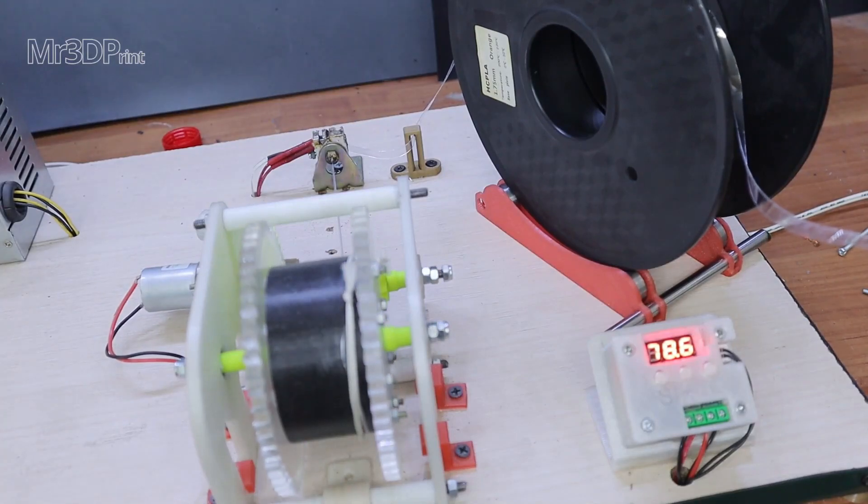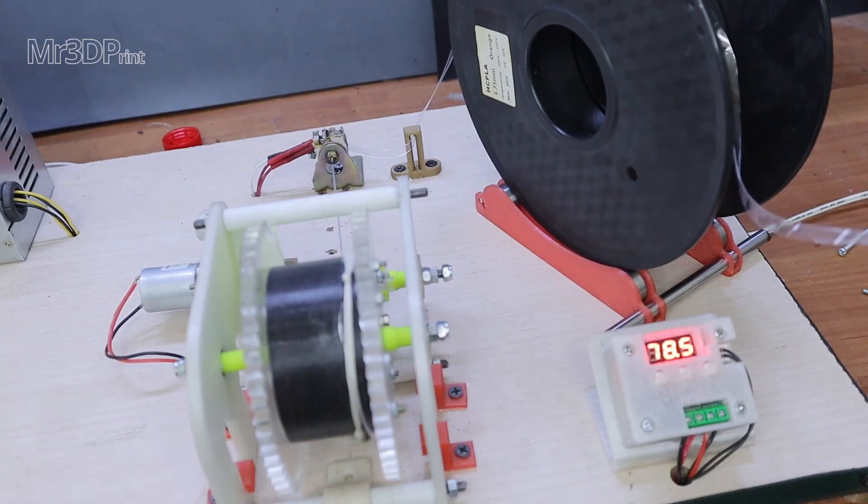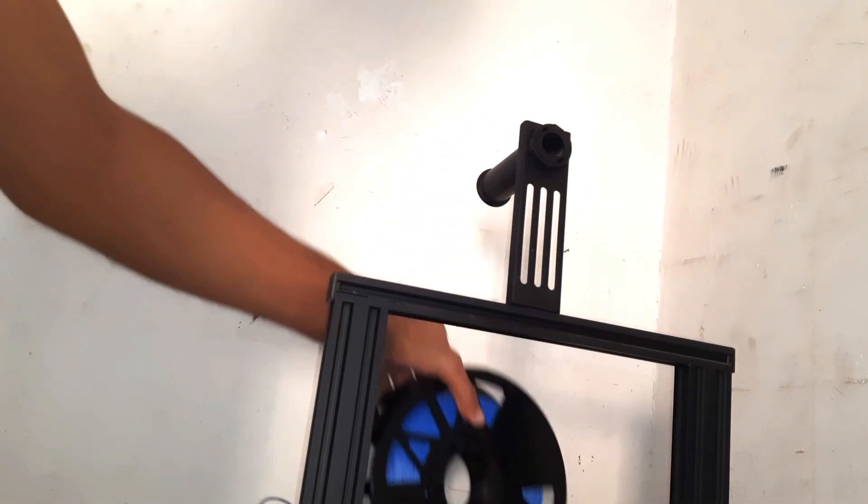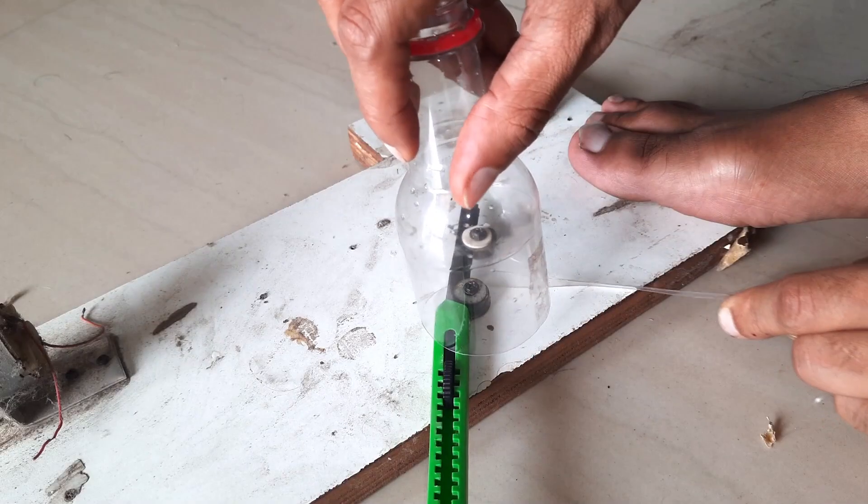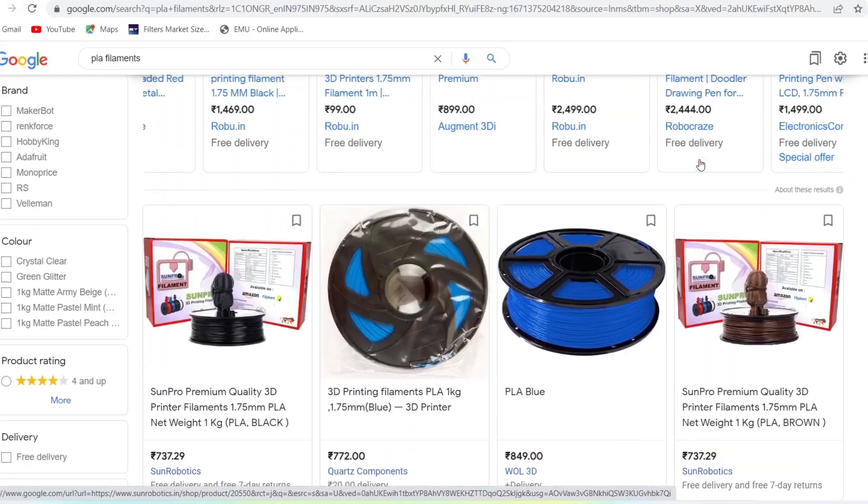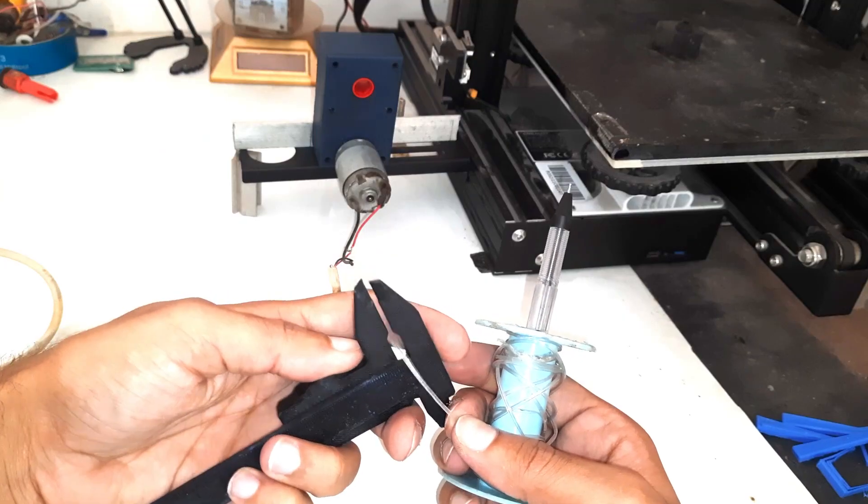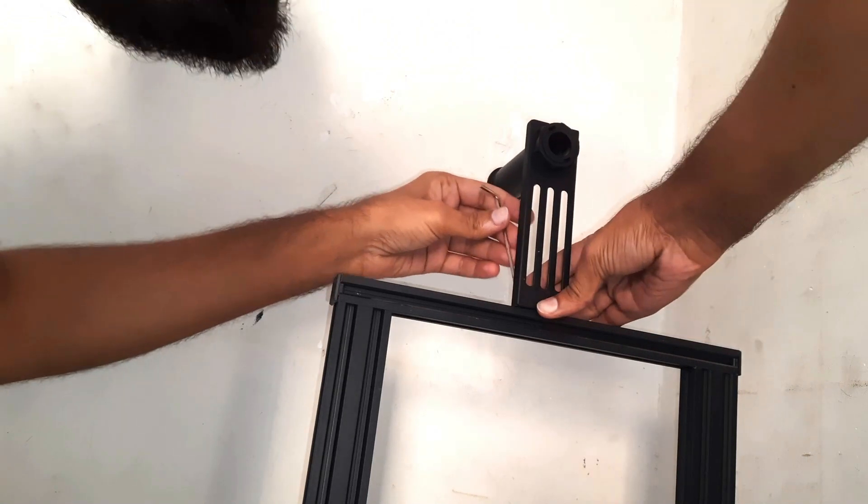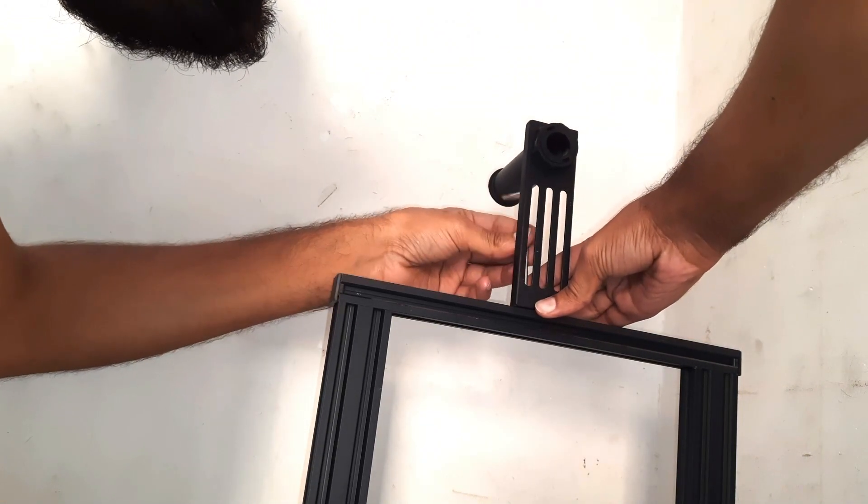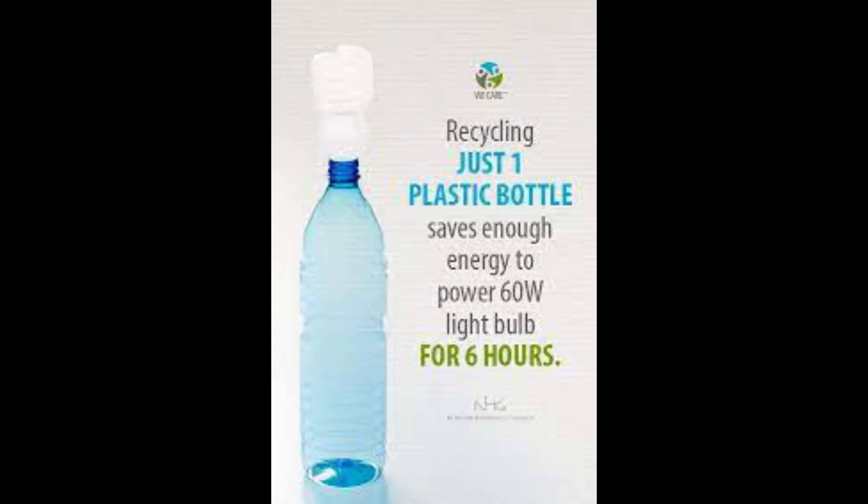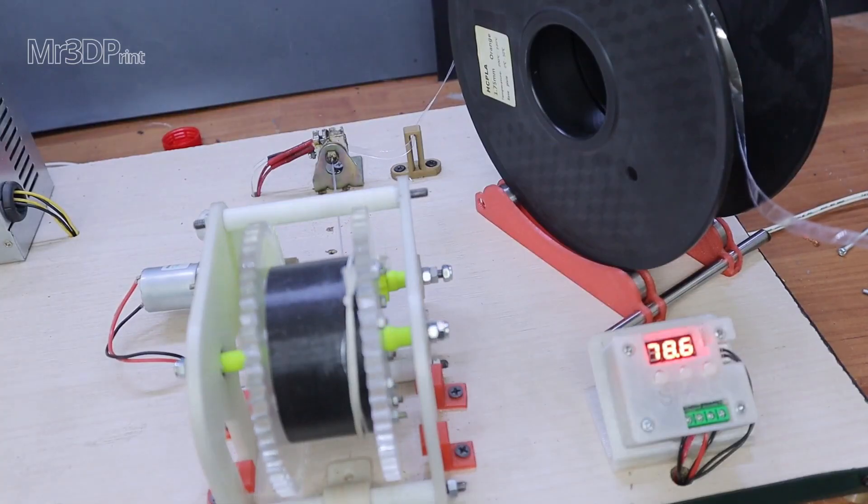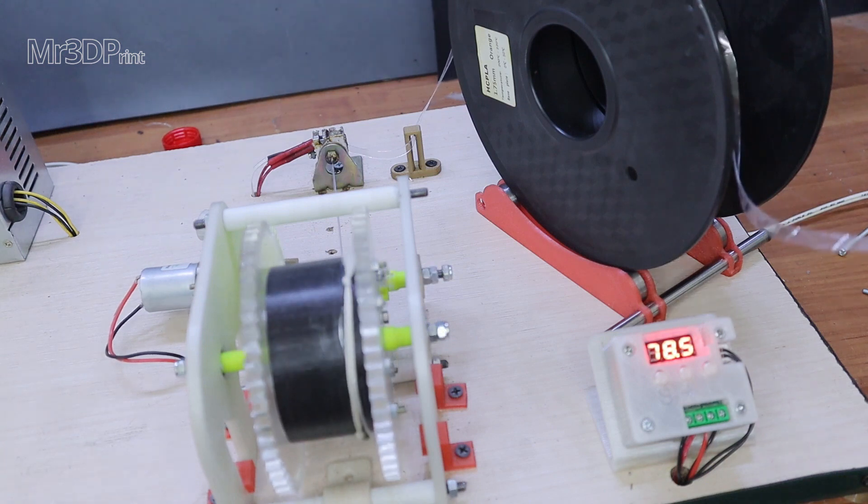You may have seen the video of making filament from plastic bottles for 3D printers. As PLA filaments are quite expensive, it's a good idea to make the filament from scratch bottles. This way we can save money as well as the environment, but it needs a setup which is quite expensive.